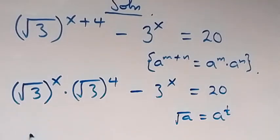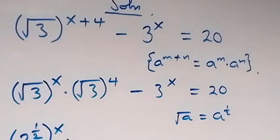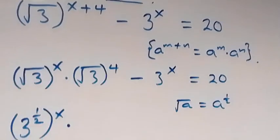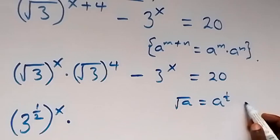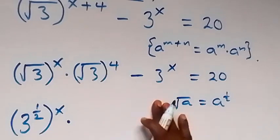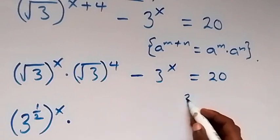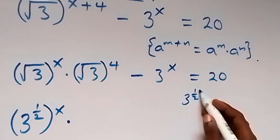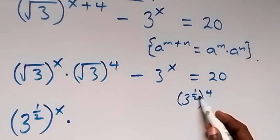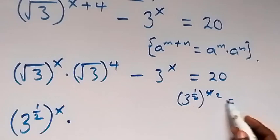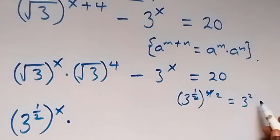That is, we can write root 3 as 3 raised to power half, which is raised to power x, times what we have here: root 3 raised to power 4. From there, we have 3 raised to power half, raised to power 4. The powers multiply: half times 4 gives 2, so that is 3 raised to power 2, which equals 9.